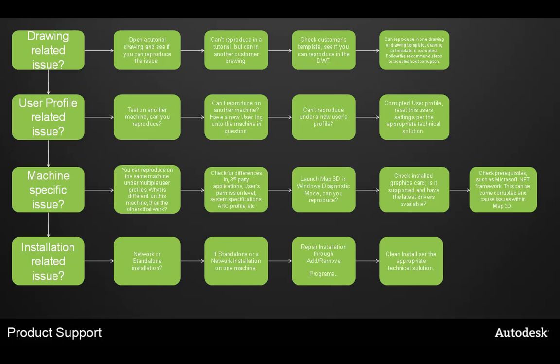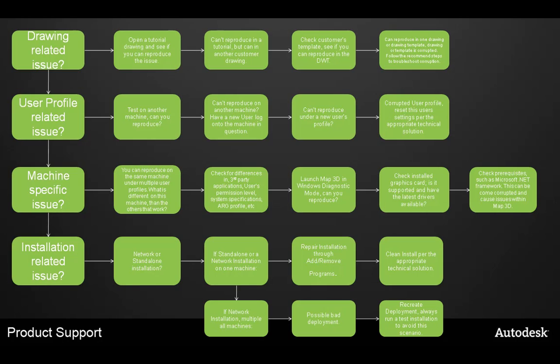For installation-related issues, are you working with a network or standalone installation? For a standalone installation on one machine, do a repair installation through add and remove programs, and potentially a clean install per the technical solution on Autodesk.com. For a network installation with multiple machines, it could be a bad deployment. One step is to recreate the deployment and run a test installation — a best practice is to test before rolling it out to other machines.